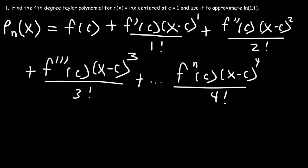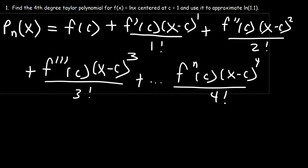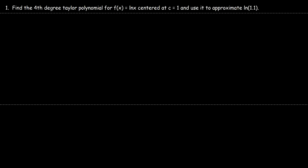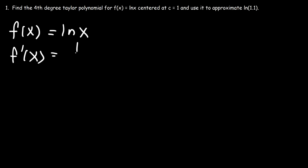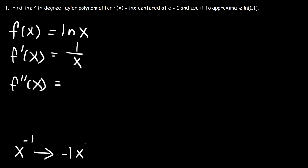We want the fourth degree Taylor polynomial, so we need to find the first four derivatives. Now f(x) = ln(x), so the first derivative is 1/x. We can rewrite that as x to the -1, so using the power rule, the second derivative is -1·x^(-2), which is -1/x².